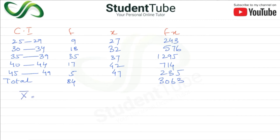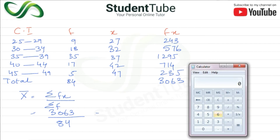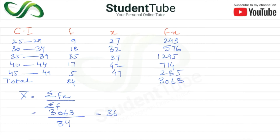Now we apply the formula: x̄ = Σfx / Σf. Σfx = 3063, Σf = 84. So 3063 ÷ 84 = 36.464. Arithmetic mean by direct method = 36.464.